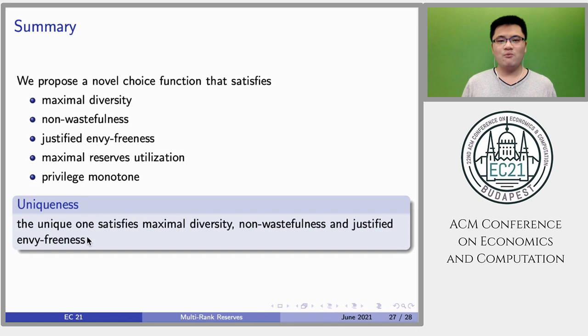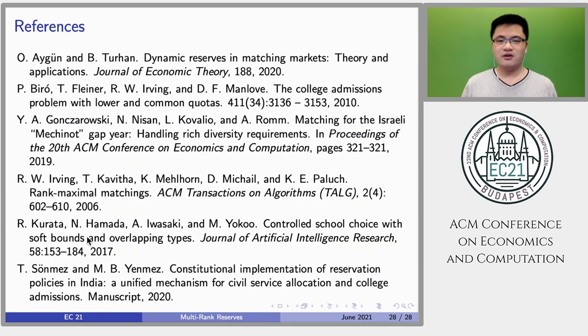In summary, we studied the school choice problem with diversity constraints under the one-to-one convention. We designed a new choice function for the school that satisfies five desirable properties. And we further proved that it's the unique choice function that satisfies maximal diversity, non-wastefulness, and justified envy-freeness. Thank you for your listening.